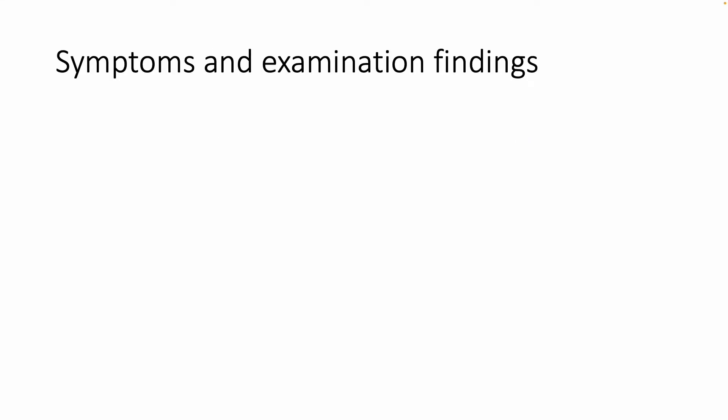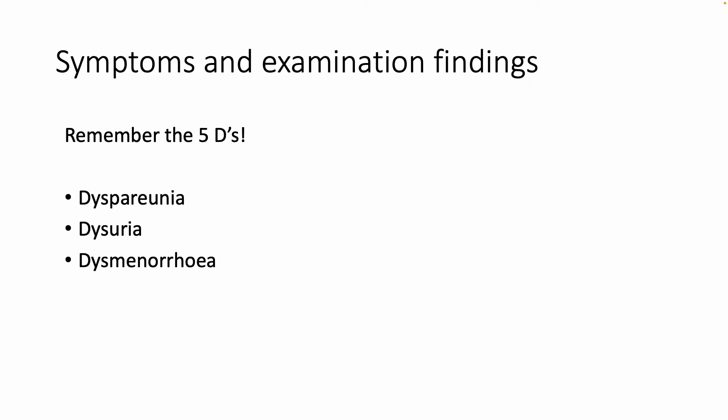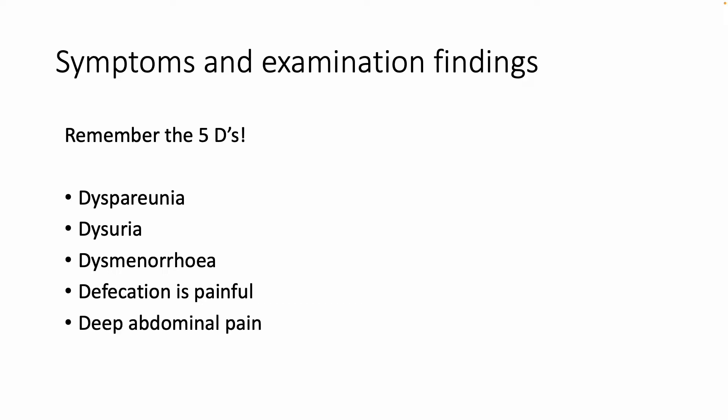In terms of the symptoms and examination findings, a good mnemonic to remember for endometriosis is the 5Ds: dyspareunia (pain during sex), dysuria, dysmenorrhea, painful defecation, and deep abdominal pain.